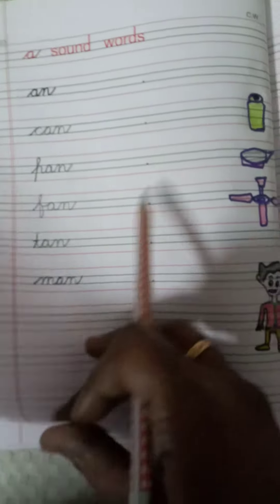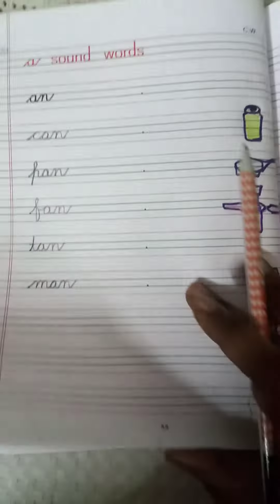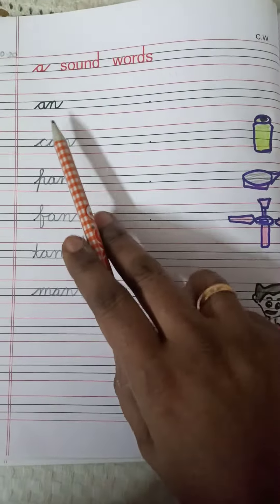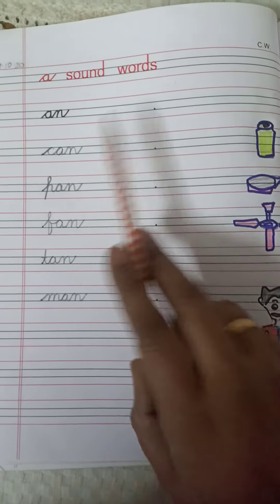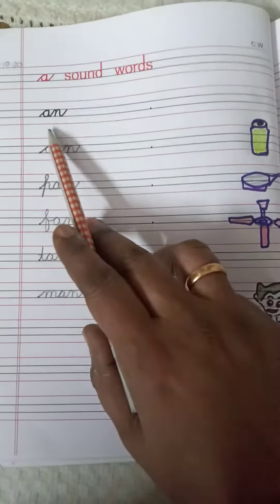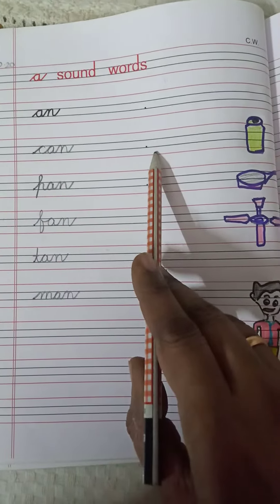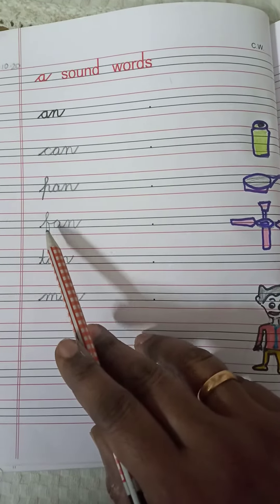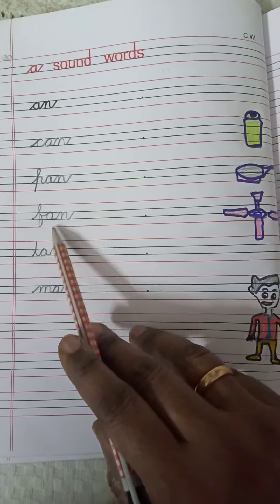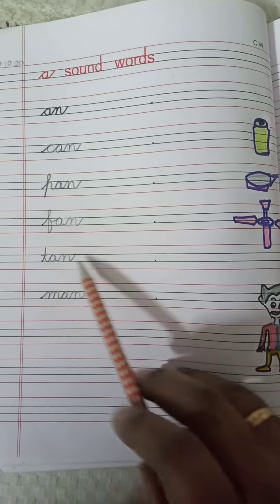Okay, we are going to write 'an' words. Yesterday we wrote 'at' words, now today we are going to write 'an' words. C sound is 'ker', 'ker-an' can. Please write 'an' here also. 'Ker-an' can, 'per-an' pan. 'Fur' - F sound is 'fur', 'fur-an' fan. T sound is 'tur', 'tur-an' tan.